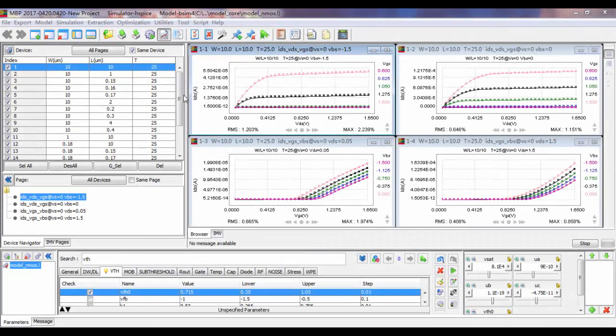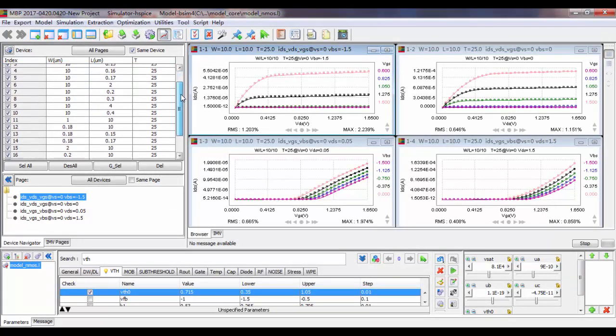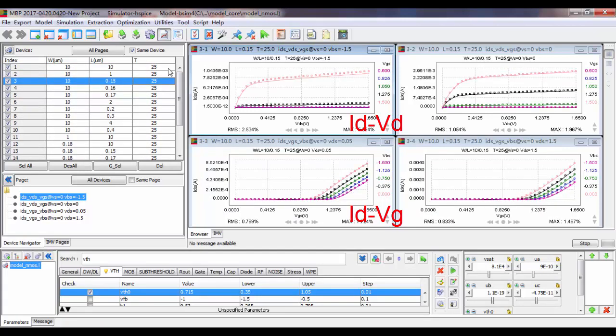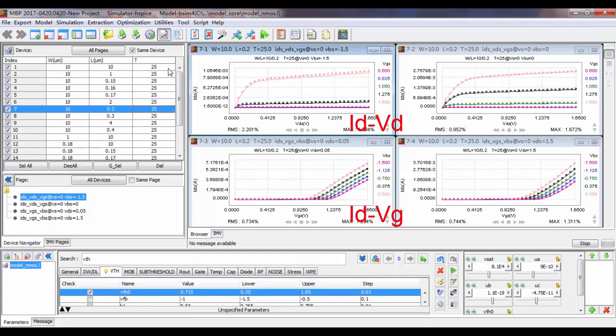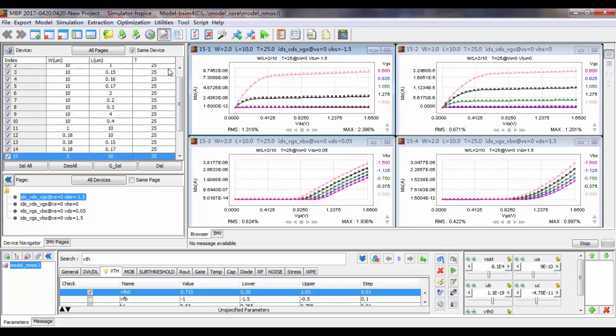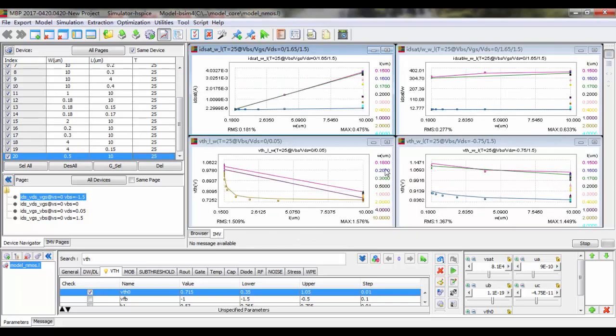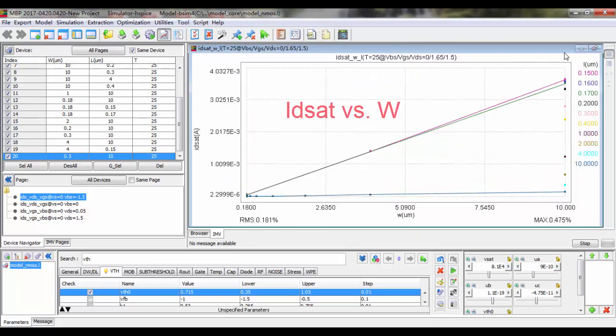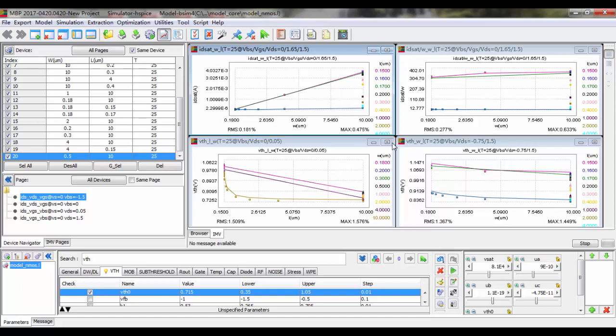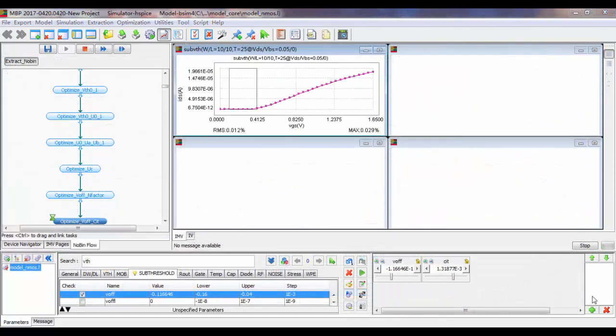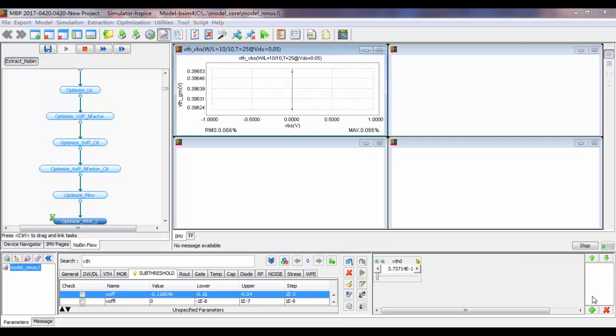Before going through the detailed modeling process, let's jump to the finish line, so you can see where we will end up. Our final model shows an excellent fit not only for the DC I-V data across geometries, but also for the intermediate variable targets such as VTH, ID-sat versus the gate length and width. Improvements on the accuracy has been achieved step by step, and in this video, I will be showing you how.